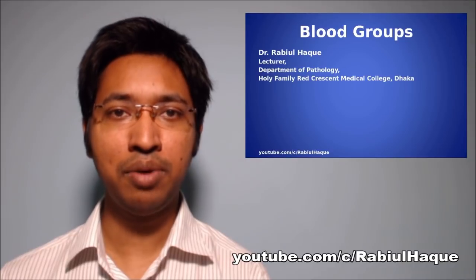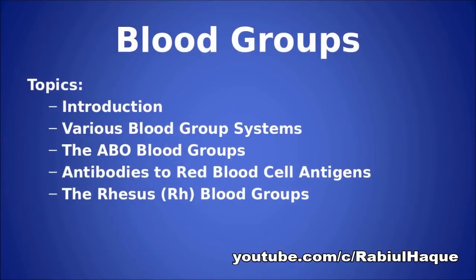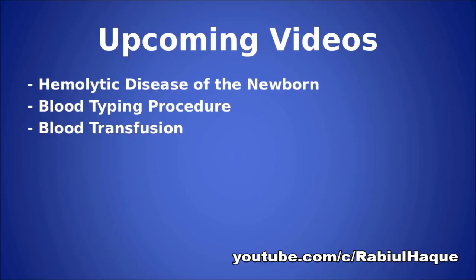Today's topic is blood groups. This video will contain an introduction to blood groups, followed by a brief discussion about the various blood group systems, the ABO blood groups, antibodies to red blood cell antigens, and we will finish by talking briefly about the rhesus blood groups. Upcoming videos of this series will include hemolytic disease of the newborn, blood typing procedure and blood transfusion. So you can think of today's video as an introductory video to blood groups and blood transfusion that will help us in understanding the upcoming videos.